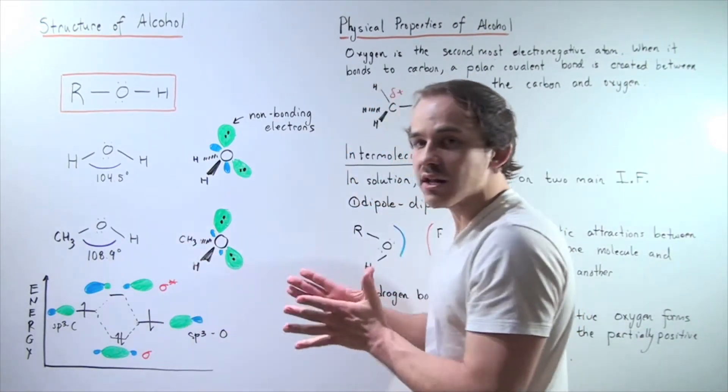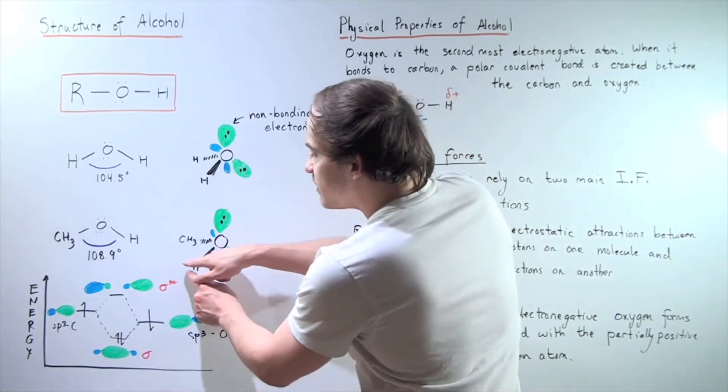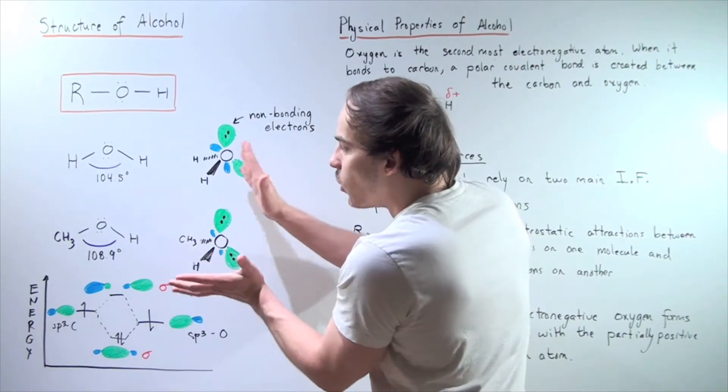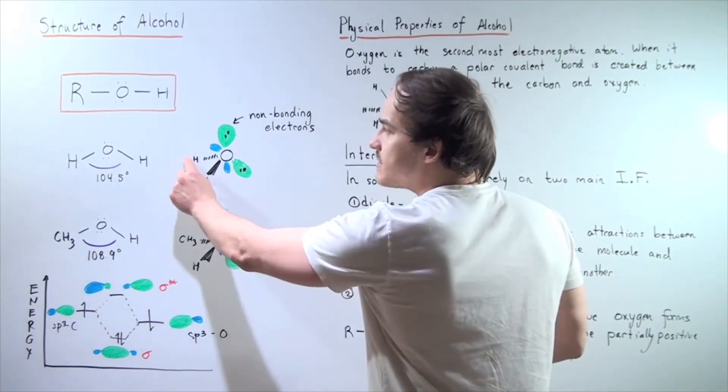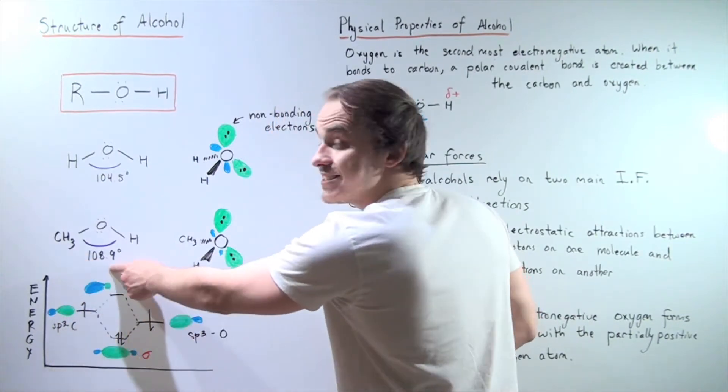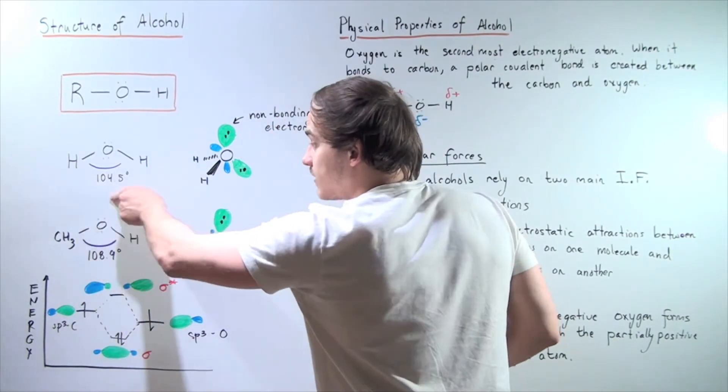there will be more electrostatic repulsion between these two atoms. And because this is larger, it won't be pushed down as much as these two atoms will. Therefore, the angle here is larger than the angle here.